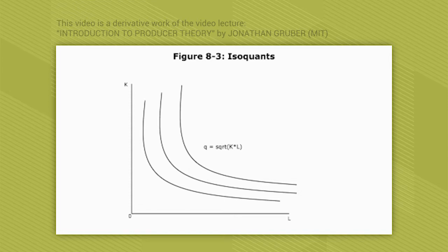Along a given isoquant, q is fixed. Each isoquant represents a different level of q, but they show how you can vary K and L to get the same amount of output. For example, to produce q = √2, you can use two units of capital and one of labor, or one unit of capital and two of labor. Isoquants have all the same features as indifference curves: the further out, the better because you're producing more, and they can't cross.